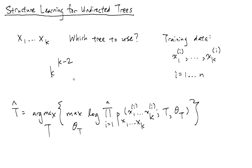Somehow we're going to search this huge space of possible trees to select the best tree, and it turns out this can be done very quickly. We're going to use maximum likelihood — we pick the tree t, where we know there are k nodes and k minus 1 edges, to find the best tree such that once we fix a tree, we do maximum likelihood for that specific tree.